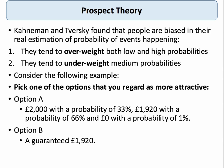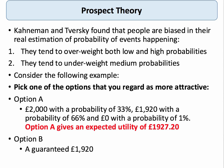Consider this example: Option A is a payment of 2,000 pounds with a probability of 33%, 1,920 pounds with a probability of 66%, and nothing with a probability of 1%. Option B is a guaranteed payout of 1,920 pounds. Typically many people go immediately for Option B — they want the guaranteed money, even though if you do the maths, Option A gives an expected payout of over 1,920 pounds. Most people choose Option B because of prospect theory.